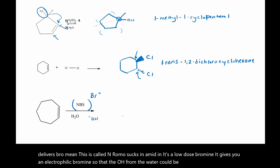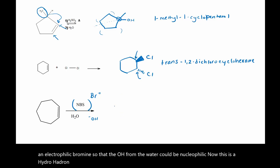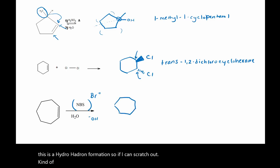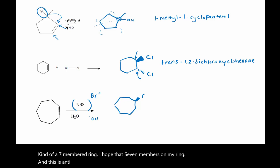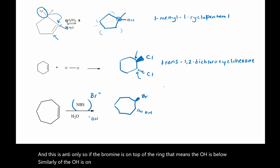Now this is a halohydrin formation. If I draw a seven-membered ring, this is anti only. So if the bromine is on top of the ring, that means the OH is below. Similarly, if the OH is on top, the bromine is below.